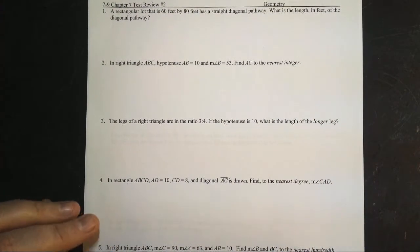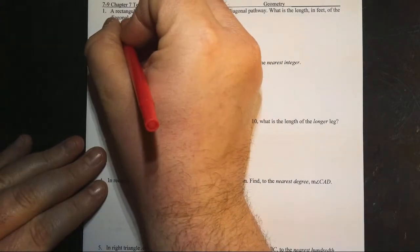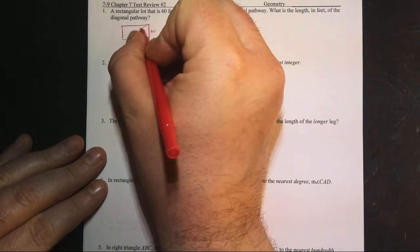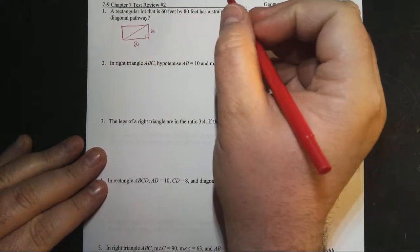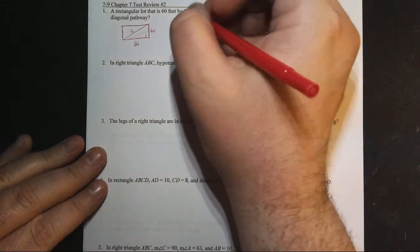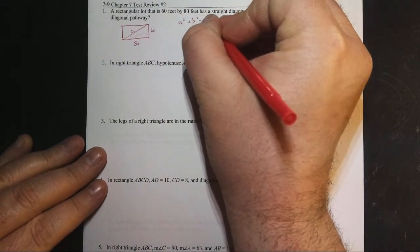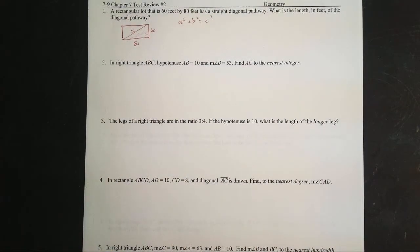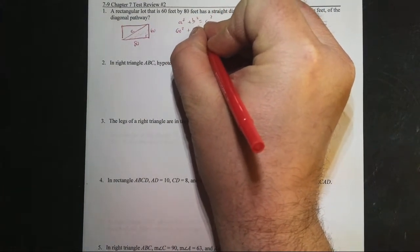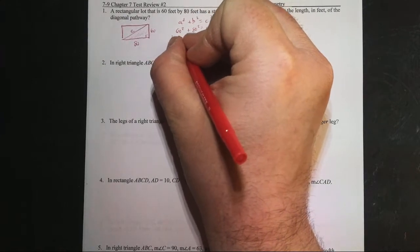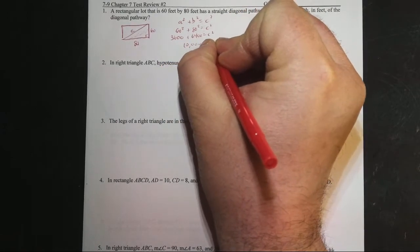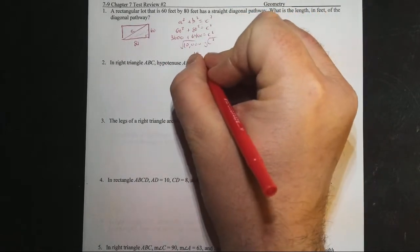First one: a triangular path of land is 60 by 80 feet — it's rectangular, so draw yourself a little rectangle. It's 80 by 60 with a diagonal cutting through, and we have a right angle. We want the length of the pathway, so we use the Pythagorean theorem: a² + b² = c². Plugging in: 60² + 80² = 3,600 + 6,400 = 10,000. Take the square root and you get 100 — that's the length of the pathway.